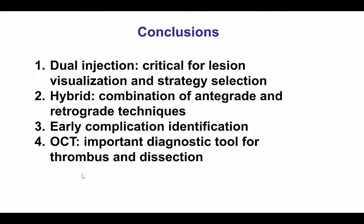The third lesson is that complications can occur with any PCI, including CTO-PCI. In this case, we had the formation of thrombus and distal dissection, which were treated with thrombectomy and implantation of an additional drug-eluting stent. This was all clarified by using intravascular imaging with OCT, which is excellent for assessing both thrombus and dissection. Thank you.